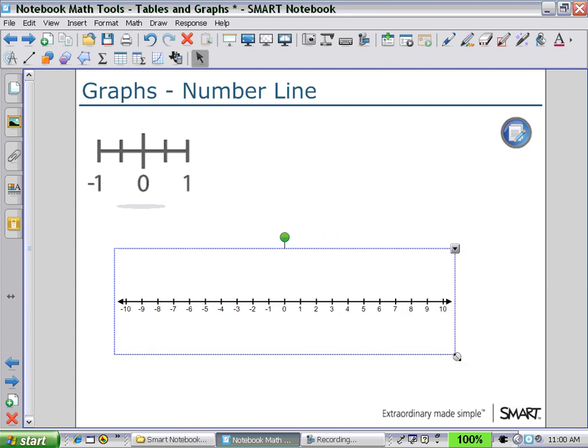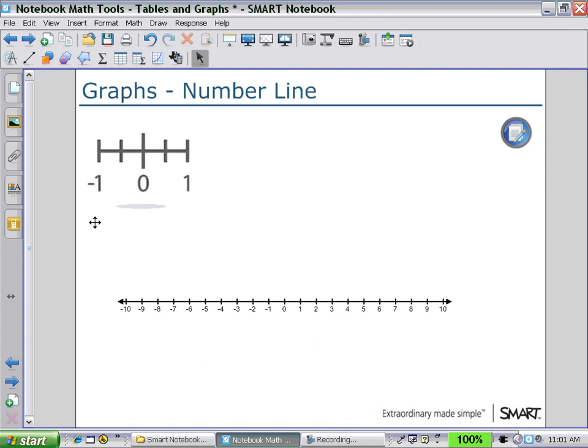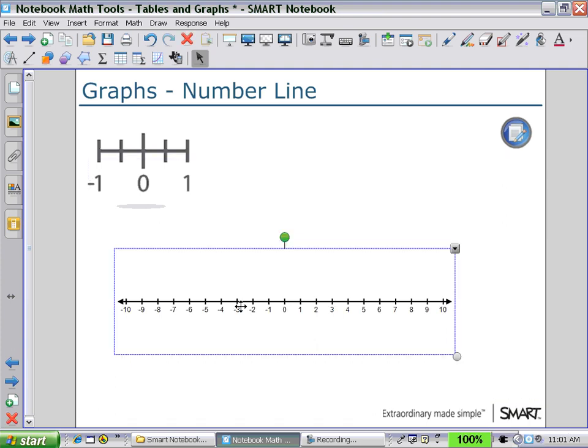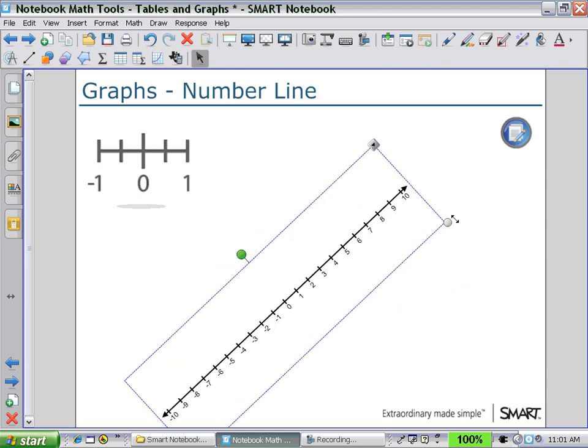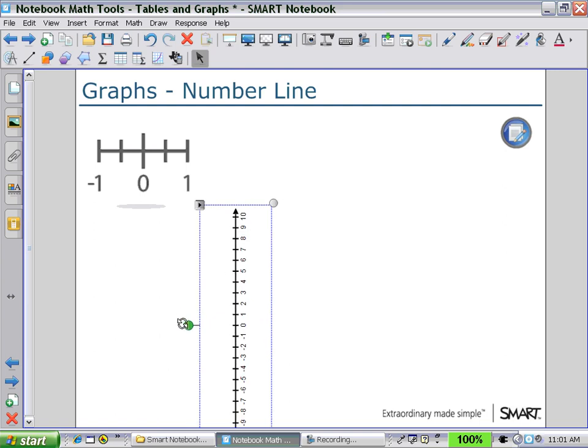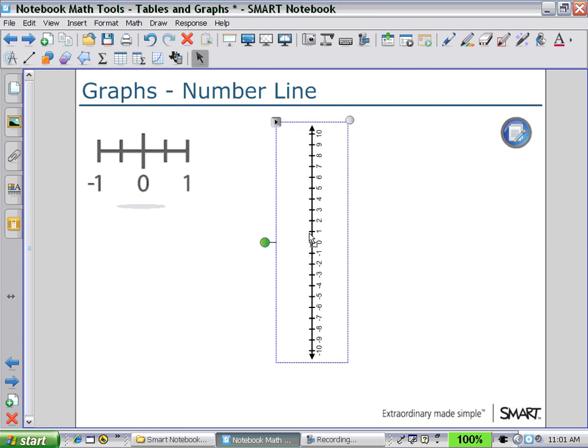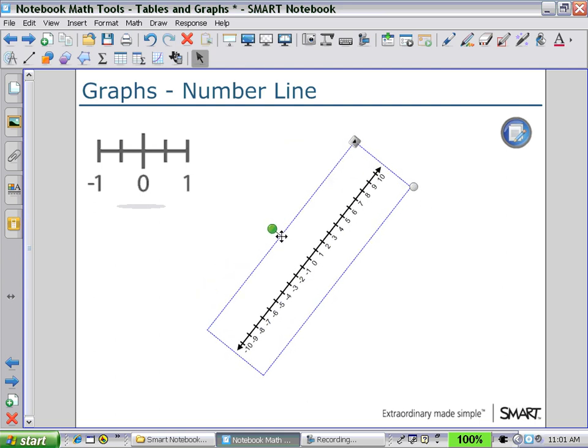We also have pull down menus for other actions. And we can also rotate so that we could have horizontal or vertical number lines. Or in fact, slanted number lines where we could have discussions of, could negative direction be going down and to the left.